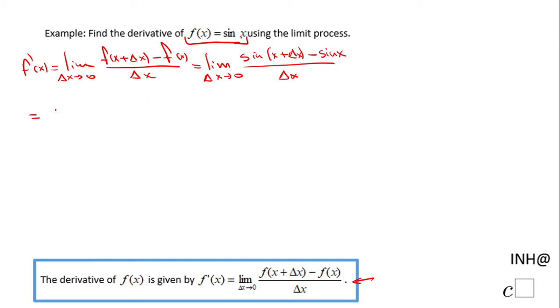...sine of x plus delta x. So we have limit when delta x approaches zero of sine of x cosine of delta x plus cosine x sine of delta x. This is the sine of x plus delta x minus sine of x over delta x.